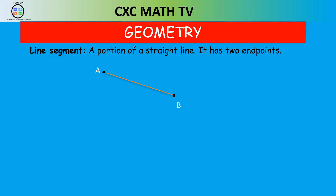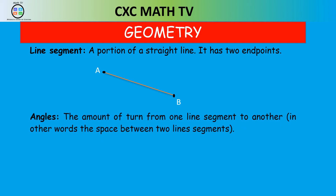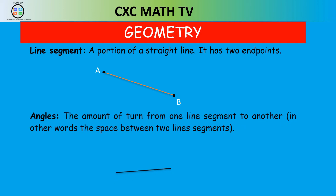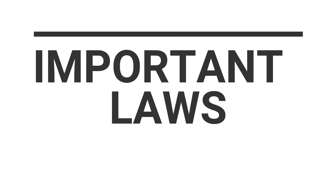The next definition is angles. An angle is the amount of turn from one line segment to another — in other words, it is the space between two line segments. In the diagram you can see the space between the two line segments. We use the symbol theta to represent the angle, which is the degree of turn from one line segment to the other.